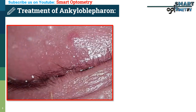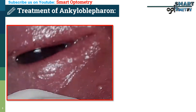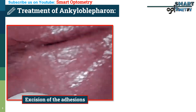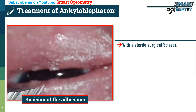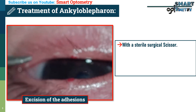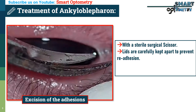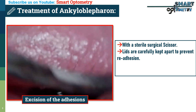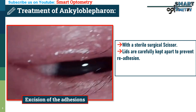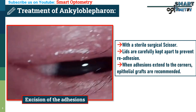What is the treatment of ankyloblepharon? Excision of the adhesions between the eyelid margins with a sterile surgical scissor. After separation, the lids are carefully kept apart during the healing process to prevent re-adhesion. In cases where the adhesions extend to the corners or angle of the eyelid, grafts are recommended to minimize the risk of recurrence.